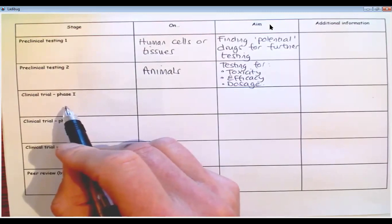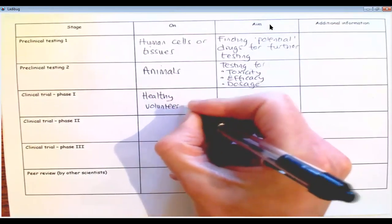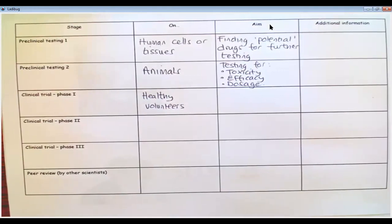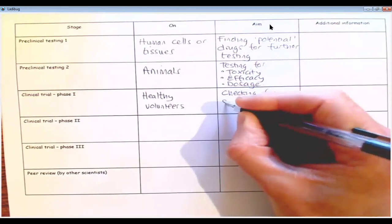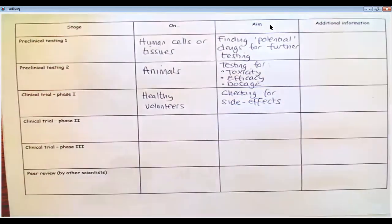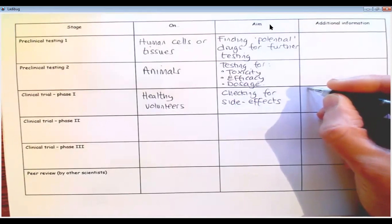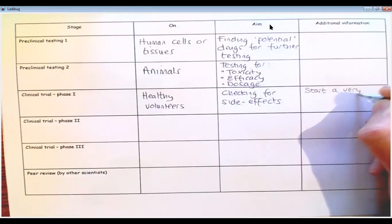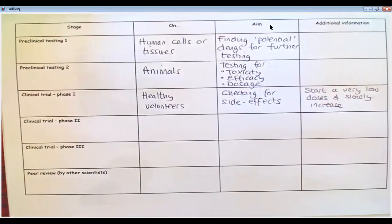Now, clinical trial phase one is actually on healthy volunteers. So these are human beings. We moved into humans. Now they're volunteers and they're healthy. They do not have the disease. Usually small numbers as well. They don't usually do large groups in this phase. And the only aim of this phase is checking for side effects. As I said, safety is the key priority number one. And the way they go about that, and I've got a little bit of additional information in this box, is they start at very low doses and slowly increase. And during that process, they'll document what sort of side effects different patients have.